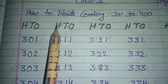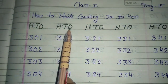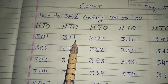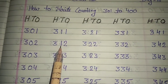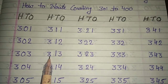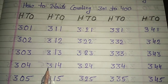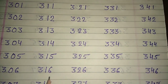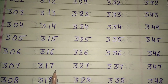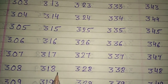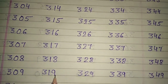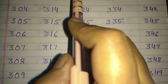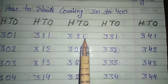Again write down the columns: hundreds, tens, and ones. 311, 312, 313, 314, 315, 316, 317, 318, 319, 320, 321.